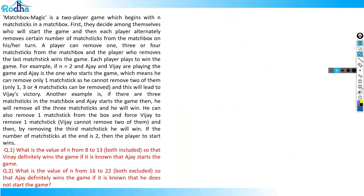This set says there are two players playing a game. A player can pick one, three, or four matchsticks — they cannot pick two. Let's start thinking: whose chance is it, and how many coins are on the table? If there is one coin and it is my chance, I'll pick it and win.